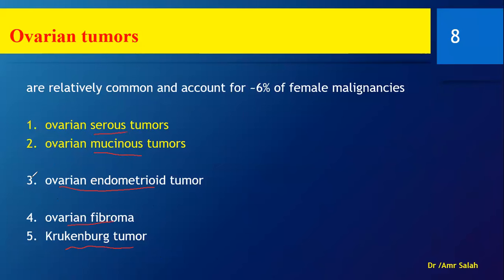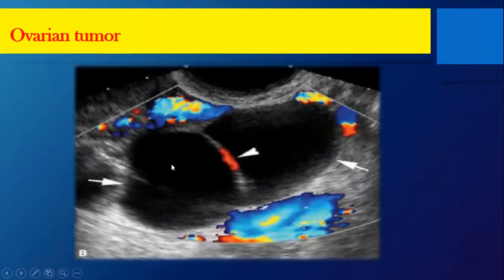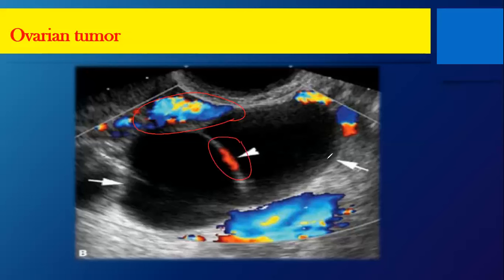There is also the Krukenberg tumor, which is actually metastases — here the ovary is not the primary; these are mets from other tumors, malignant of course. The most important feature of ovarian tumors is that they do have vascularity. The cysts, even complex ones, do not have vascularity inside. When they do have vascularity — that is a tumor.